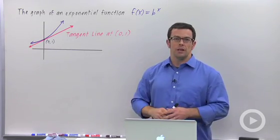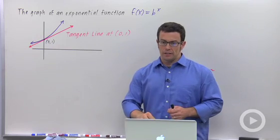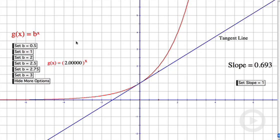In order to do that, I'm going to use a demonstration from Geometer's Sketchpad. You can see I've got graphed the function g(x) equals 2 to the x here. It's actually b to the x, but I can change the value of b to any value I want. That graph is in red, and then the graph of the tangent line is in blue.